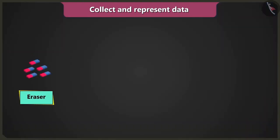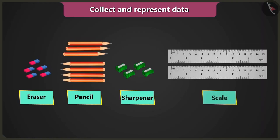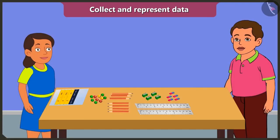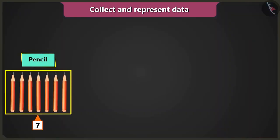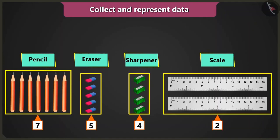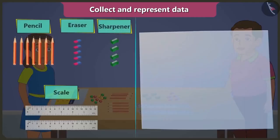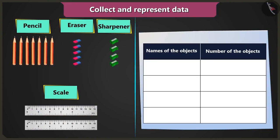This way I can easily know how many erasers, pencils, sharpeners and scales I have. Let me teach you one more way to collect the data and fill it in the table. First, group the given objects whose data you wish to collect. I have seven pencils, five erasers, four sharpeners and two scales. Now create a table — write the names of the objects in the first column and count of objects in the second column.